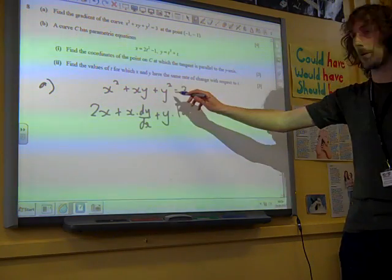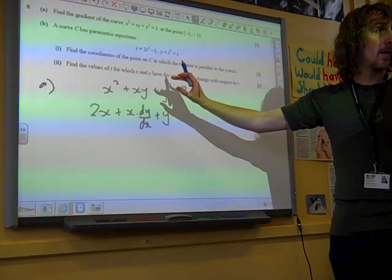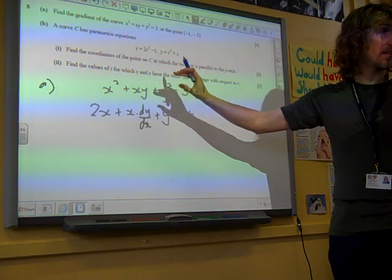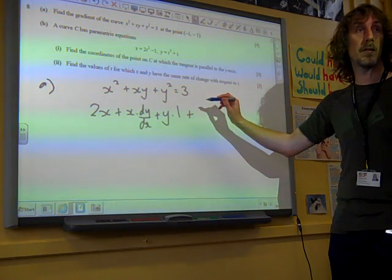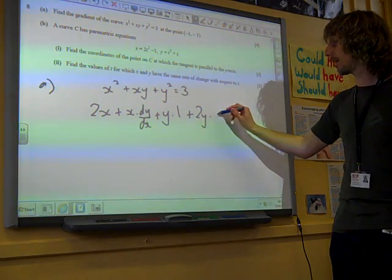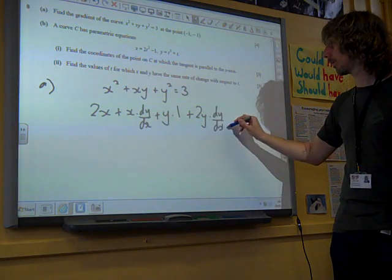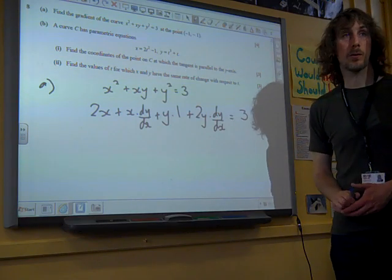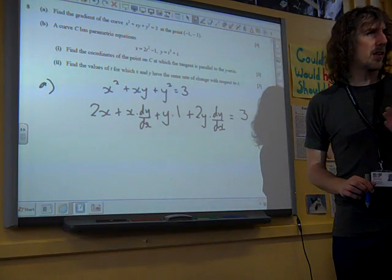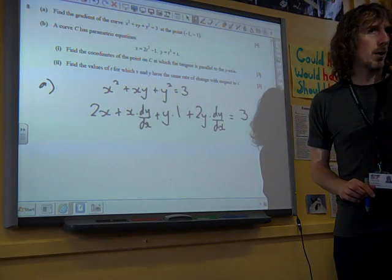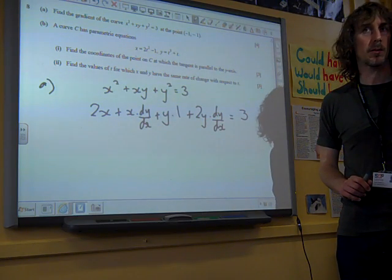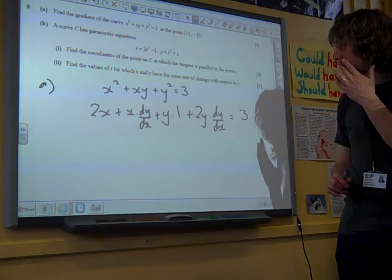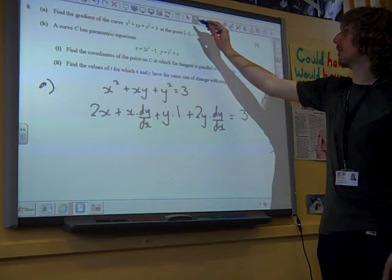And then we've got this common thing of differentiating y squared with respect to x, and we know that gives us the derivative of y squared with respect to y, which is 2y times dy/dx, equals 3. That would be 0, yeah, thank you.